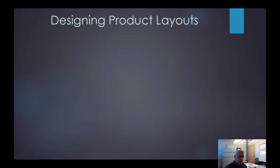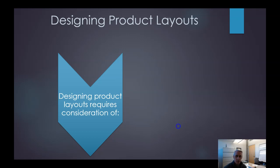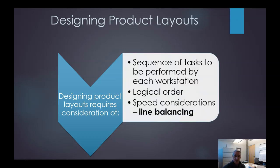When we're designing product layouts, it requires a lot of consideration of a few things. We want to understand the sequence of tasks that have to be performed by a workstation, how many workstations, what's the order of these workstations, and what are the speed considerations. This is where we talk about something called line balancing, which we'll get to in a little bit.